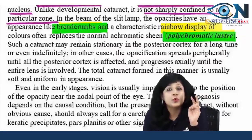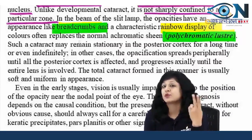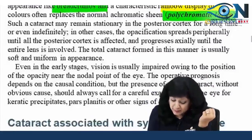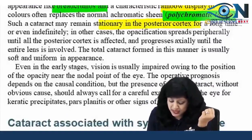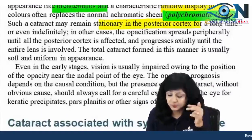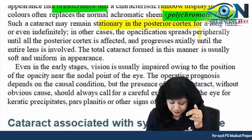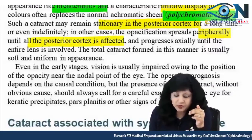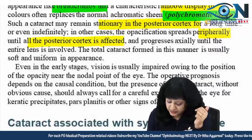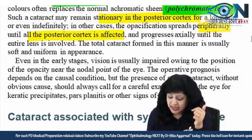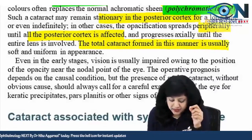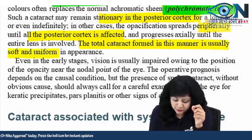Unlike the developmental cataract, it is not sharply confined to a particular zone. A specific feature of the complicated cataract is that it is not particularly defined — it will spread. In the beam of the slit lamp, the opacities have the appearance of a breadcrumb and a characteristic rainbow display of colors, that is your polychromatic luster. The two important features of complicated cataract are the breadcrumb appearance and the polychromatic luster, due to which it is also called the rainbow cataract.